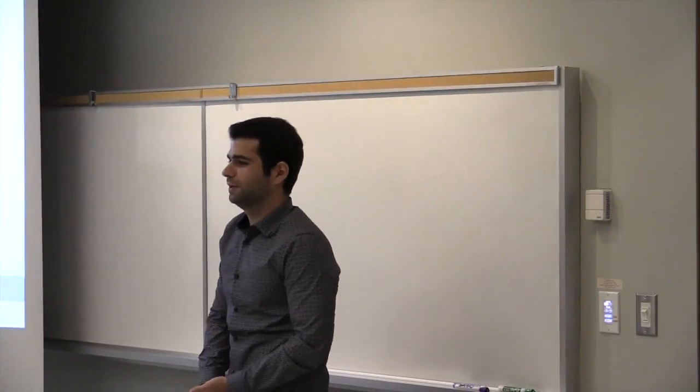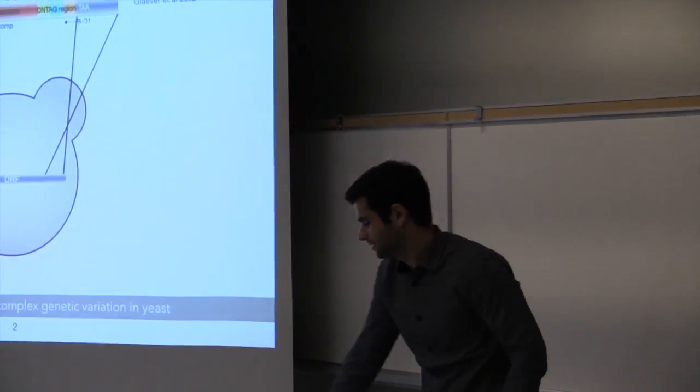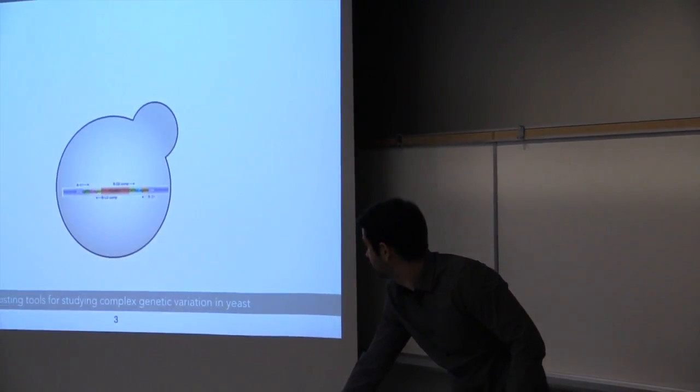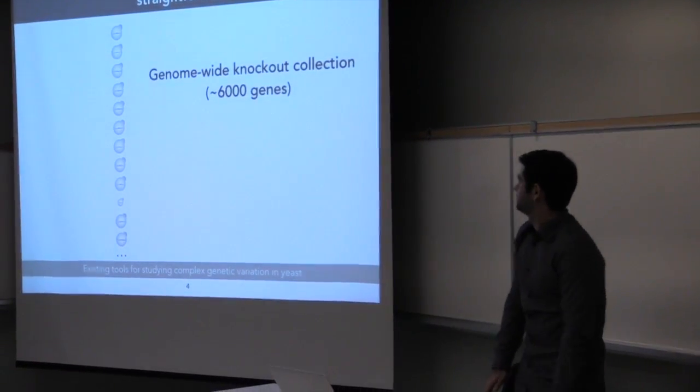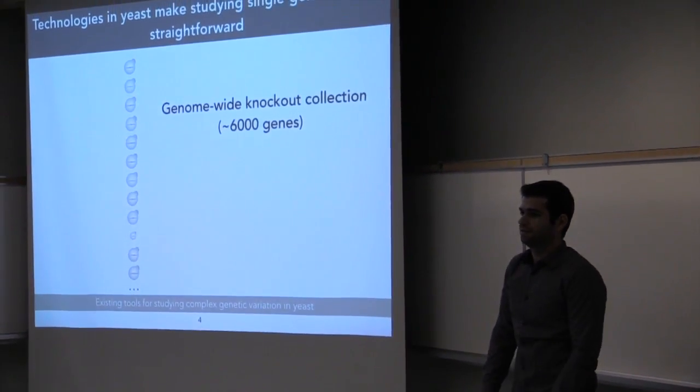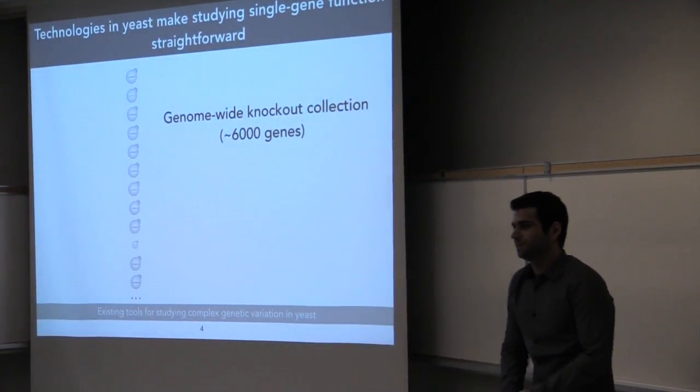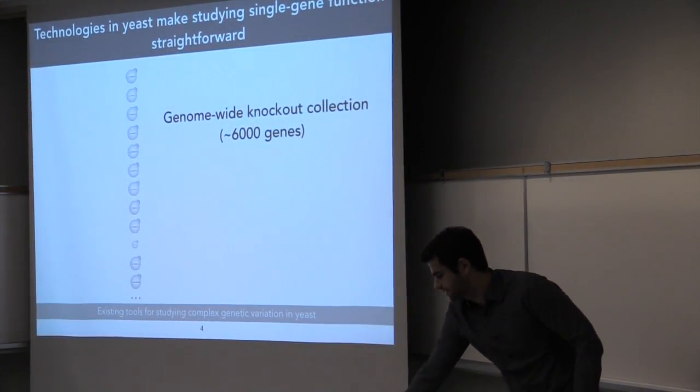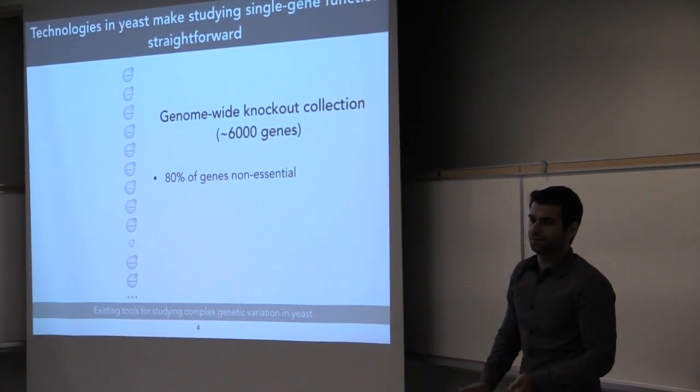So in a yeast cell, if you want to make a knockout, it's very straightforward. All you have to do is design the proper homologous recombination cassette and integrate into the genome. It's so easy people have done it for about all the 6,000 genes in the yeast genome, but the lessons weren't very exciting. The lessons were that 80% of the genes are not essential and that 68% of them actually give you no phenotype at all in terms of growth under rich medium.